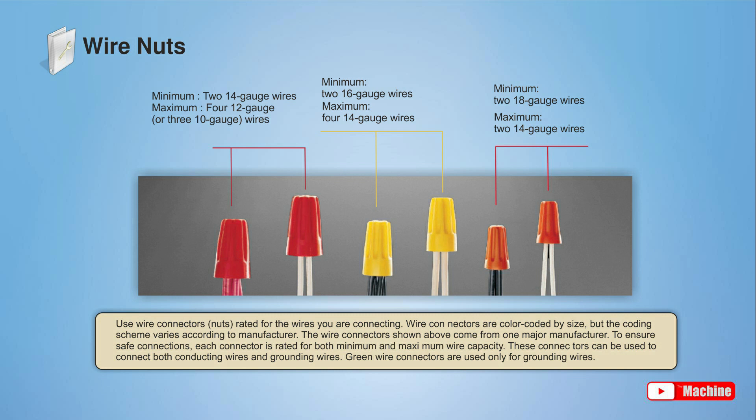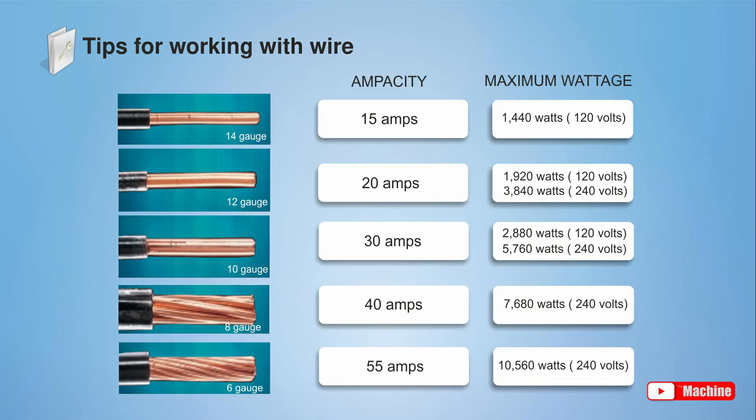Wire connectors are color coded by size, but the coding scheme varies according to manufacturer. The wire connectors shown here come from one major manufacturer. To ensure safe connections, each connector is rated for both minimum and maximum wire capacity. Wire ampacity is a measurement of how much current a wire can carry safely. Ampacity varies by the size of the wire. When installing a new circuit, choose wire with an ampacity rating matching the circuit size.